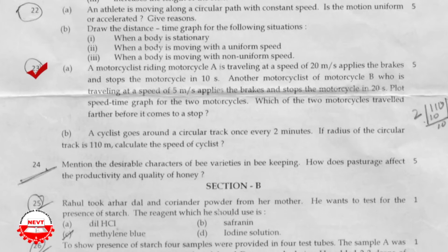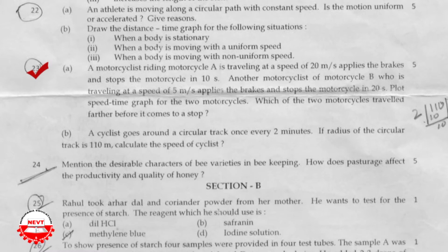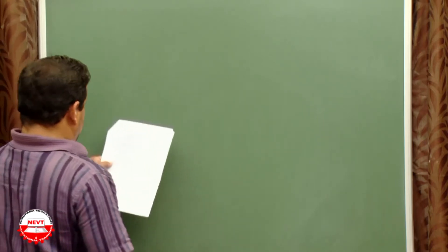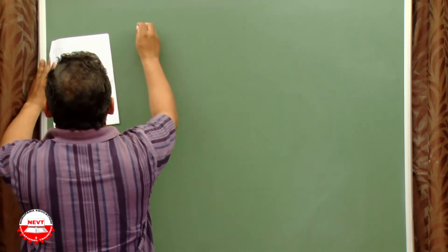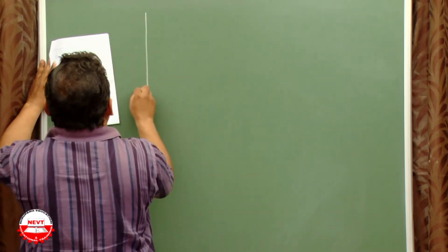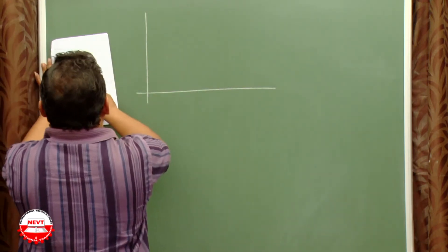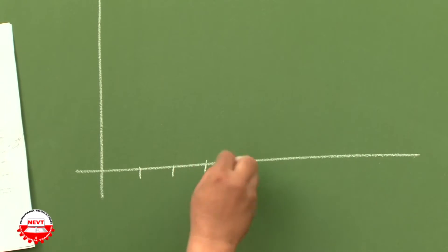Question 23: motorcyclist A travels at 20 m/s, applies brakes, and stops in 10 seconds. Motorcyclist B travels at 5 m/s, applies brakes, and stops in 20 seconds. Plot the speed-time graph for both and determine which motorcycle travels further before stopping.